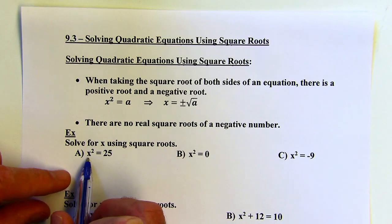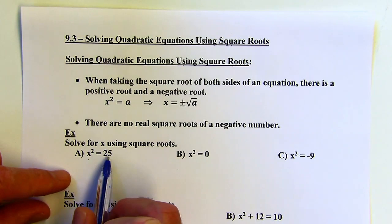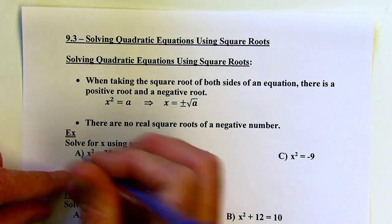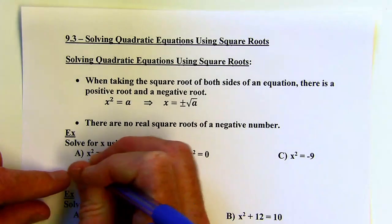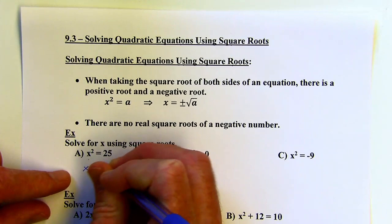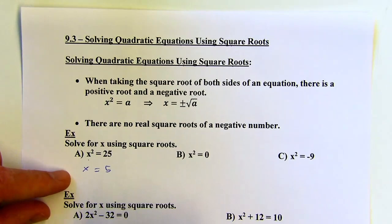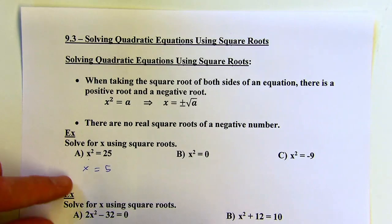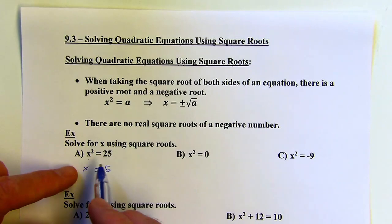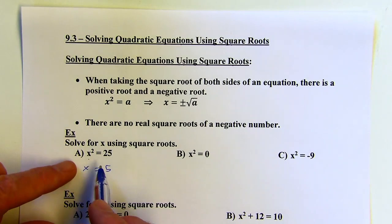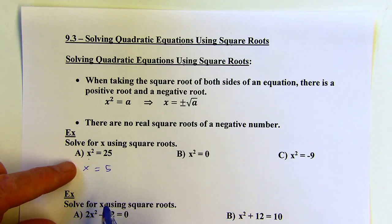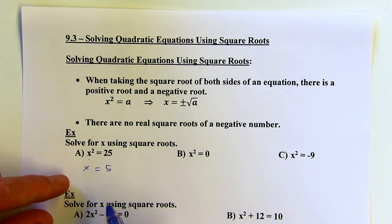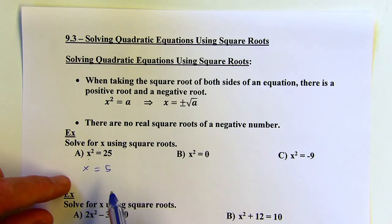You might think, I just need something squared that equals 25 — well, that would be 5. A lot of times I'll see an answer like that, and that's partially right. But when you take the square root of both sides of an equation, you're going to get two different answers.